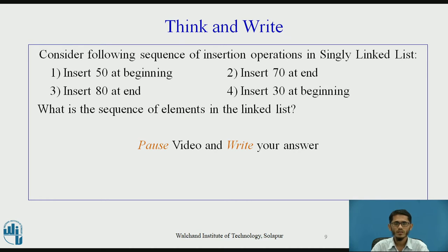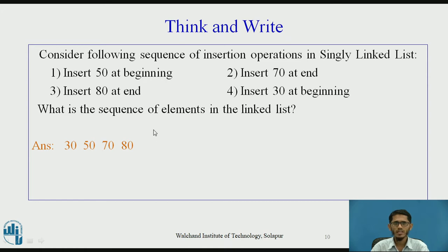The elements in the linked list will be in this order: 30, 50, 70, and 80. Initially, element 50 was added at the beginning. When we add 70 at the end, it goes after 50 since 50 is the only node, giving us 50 and 70. Then 80 is inserted at the end, going after 70, giving 50, 70, and 80. Finally, 30 is added at the beginning, placed just before 50, resulting in the sequence 30, 50, 70, 80.